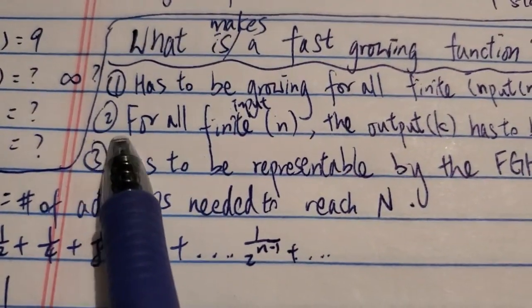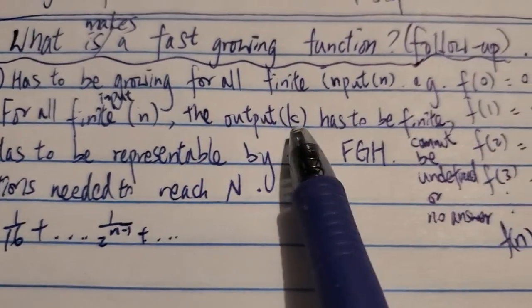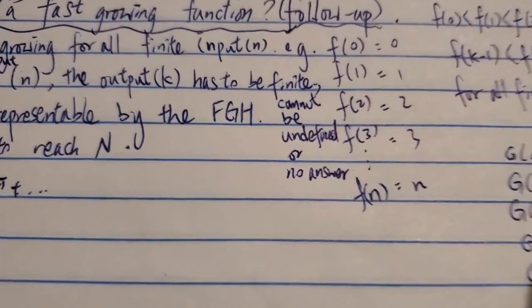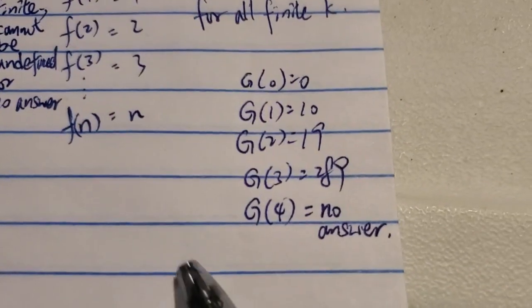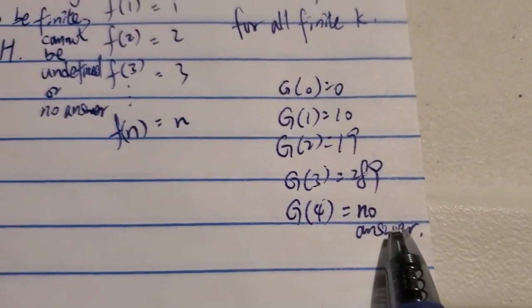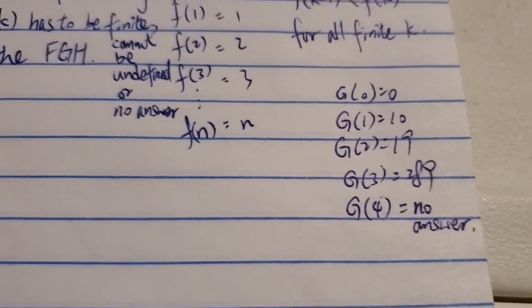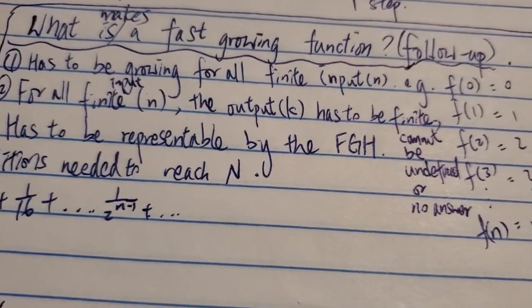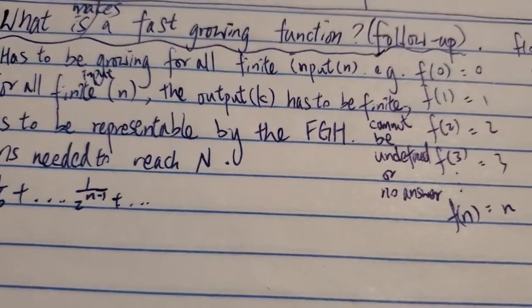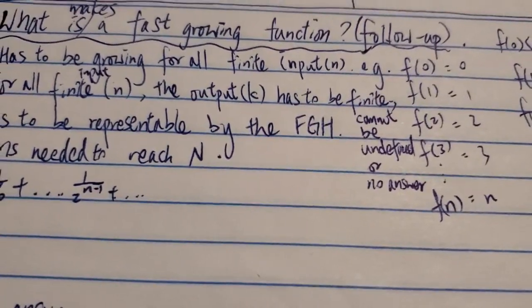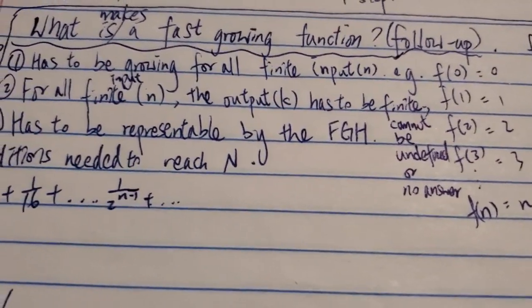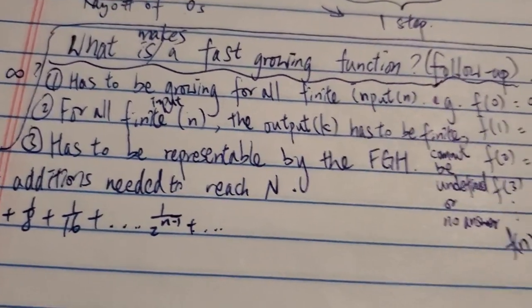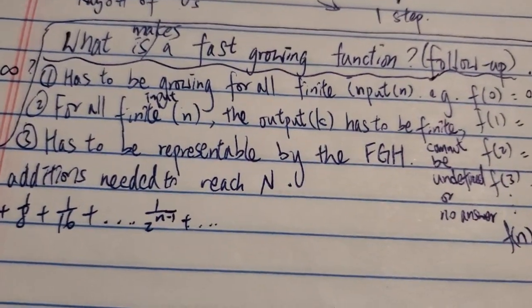So that's the first reason why this is not a fast-growing function, or not even a function. And then the second point is that for all finite input n, the output k has to be finite and cannot be undefined or no answer. So again, using that example, if g(4) is infinity, and then g(5), g(6), they're all infinity, then it doesn't count, because for all finite input, the output has to be finite as well. It cannot just have infinity. I think most people agree with that for some reason. If the output is infinite or some undefined thing, then it cannot be a fast-growing function.